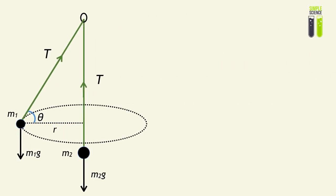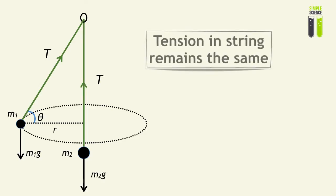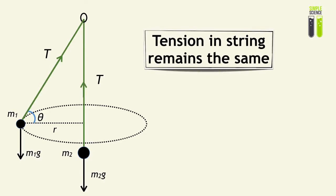The key thing you must understand when solving these questions is that the tension in the string remains the same. In other words, the tension acting on M1 is the same as the tension acting on M2.